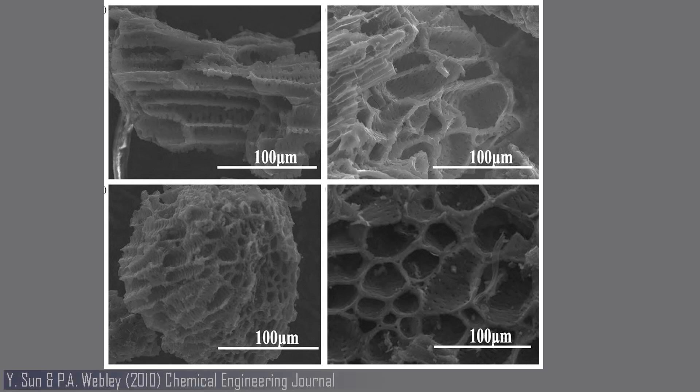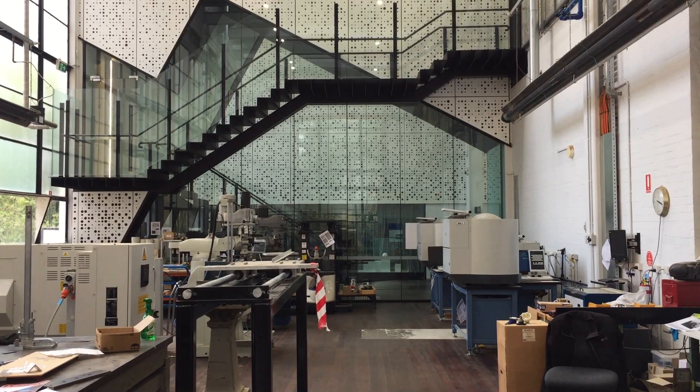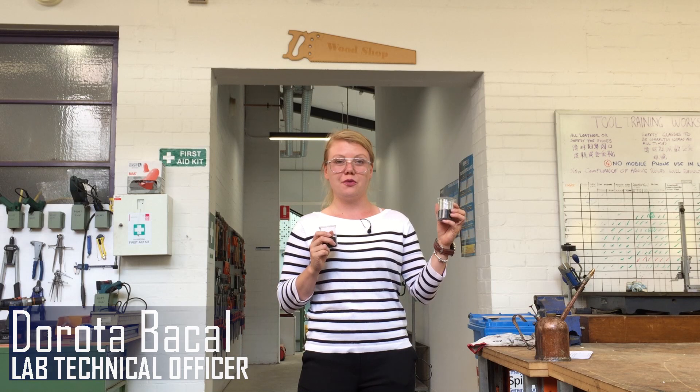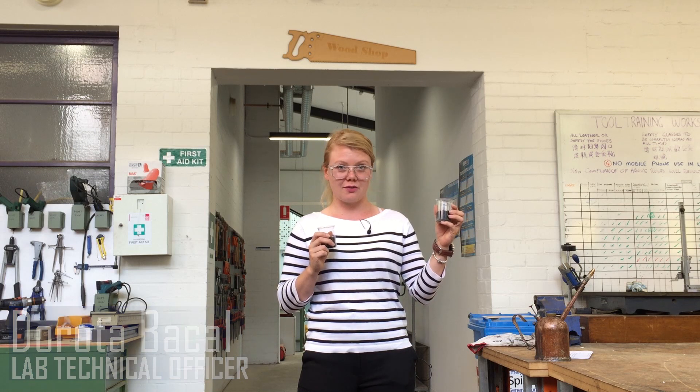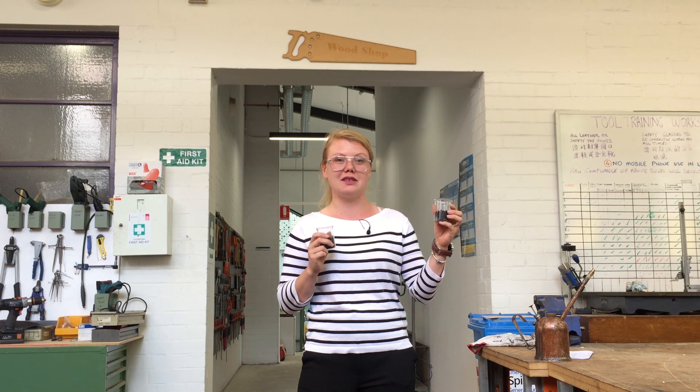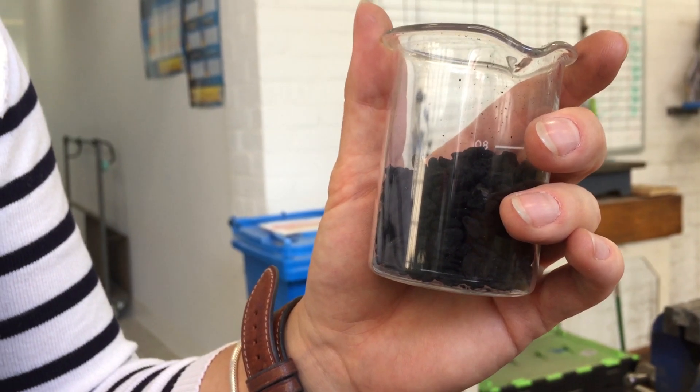As illustrated in these electron microscope images, by activating this carbon it now has about a billion times more surface area than the unactivated one, which means its adsorption capacity is much, much larger.